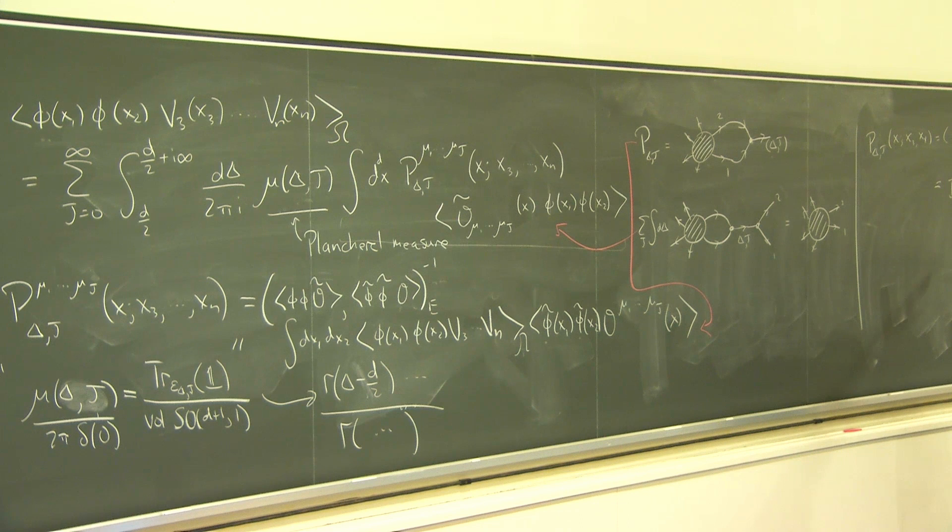The nice thing that happens in the case of a four-point function is that this conformally invariant integral of a four-point function against a three-point function only depends on three points — x, x3, and x4 — so it's fixed by conformal invariance up to a constant. Conformal invariance tells us this integral has to transform like a conformal three-point function, but conformal three-point functions are fixed by conformal invariance. So we just get some constant I(delta,J) times the only thing that can appear from conformal invariance.